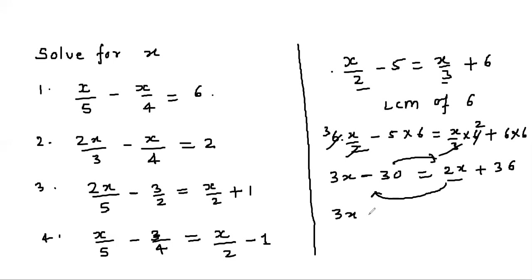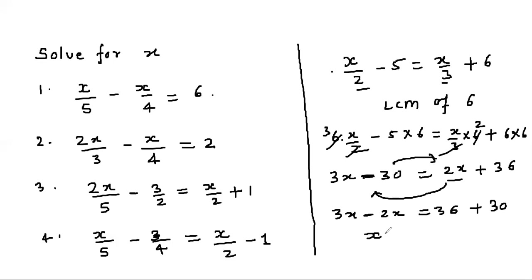This 2x can be shifted to the LHS and this 30 can be shifted to the RHS. So 3x - 2x = 36 + 30, which gives x = 66 as our answer.